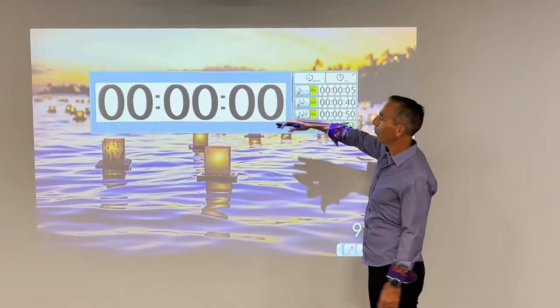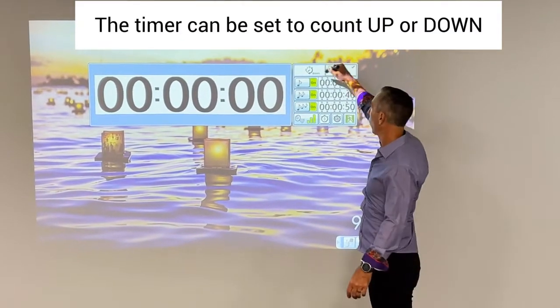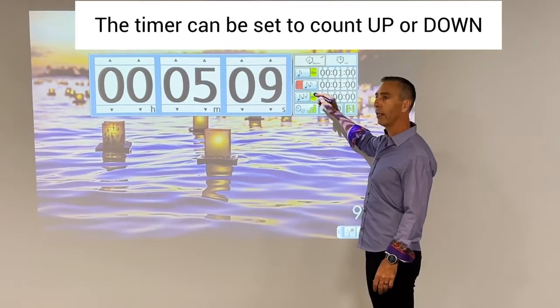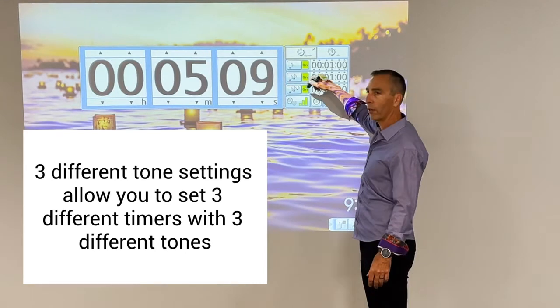This is an up right now, so from zero it's going to count up or down, so you can go either way. And then you have three different tone settings, so you have one, a two, and a three.